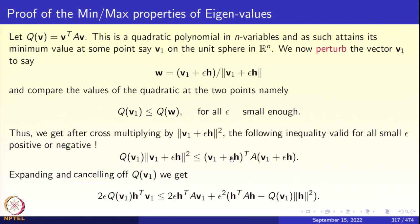Expanding this matrix product, we get V1^T A V1 + ε·(h^T A V1) + ε²·(h^T A h). Since V1^T A V1 = Q(V1) and ‖V1‖² = 1, the constant terms Q(V1) cancel from both sides. There remain the ε² terms combined into one, and the middle term 2ε·h^T·(A V1 − Q(V1)·V1). We critically use the fact that A is symmetric here, so h^T A V1 = V1^T A h, allowing the two ε-terms to combine.